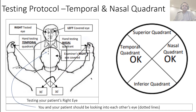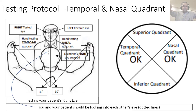A common issue is that students perform well during the test but forget to record the findings. A very good idea is to draw the diagram of all four quadrants before you start testing — just like drawing the H-pattern before extraocular movement testing. With the diagram already in front of you, all you need to do is write 'okay' or place a check mark as you go. That way, once horizontal quadrant testing is done, you can record immediately.